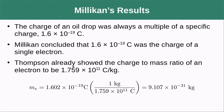Since Thomson had already shown the charge-to-mass ratio of electrons, it was fairly straightforward to figure out the electron's mass. We have the coulombs that Millikan found, we divide that by the charge-to-mass ratio Thomson found, and we get that an electron weighs 9.107 × 10⁻³¹ kilograms — really, really small, with very little mass.